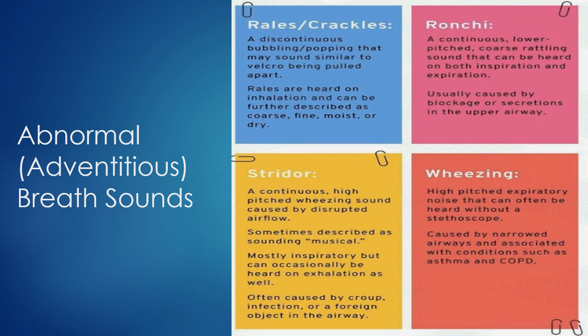Wheezes are continuous, musical-sounding noises heard on inspiration and expiration — which is why we must auscultate during both phases. Wheezes are associated with narrowing of the airways, like asthma or a partial obstruction; that musical sound is air squeezing through narrowed airways. Ronchi are classified as a type of wheeze but are associated with secretions or fluid in the airways — not in the alveoli like crackles, but in the airway itself. They're usually low-pitched, sound like rumbling or snoring, and often clear with coughing. If you've ever been sick and could hear the junk moving in your lungs when you breathe and needed to cough — that's ronchi.